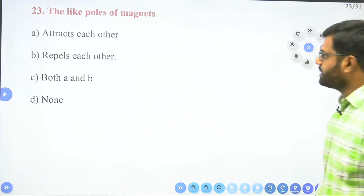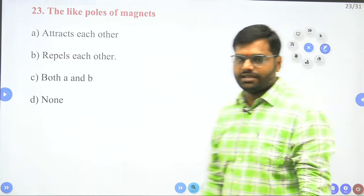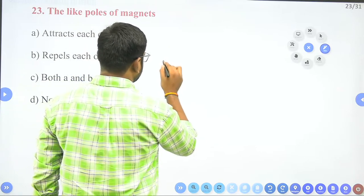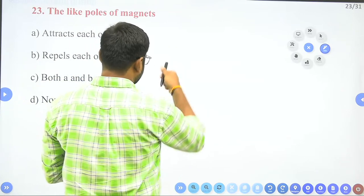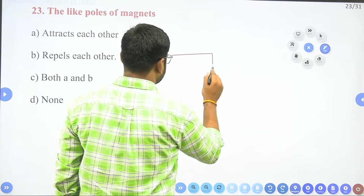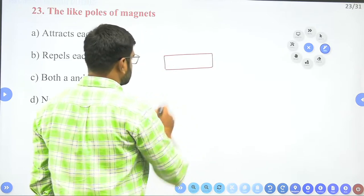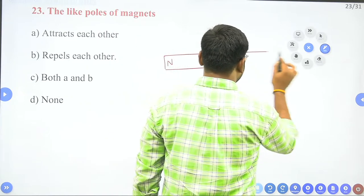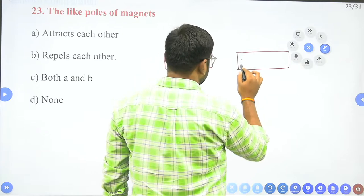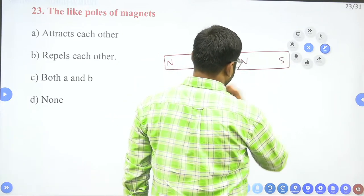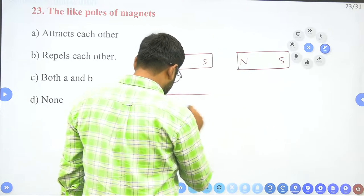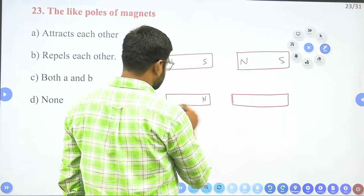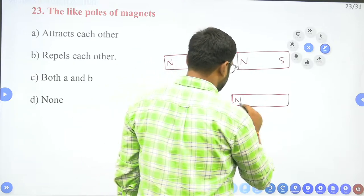The next question is about like poles of a magnet. Consider two bar magnets — the first has a north pole and south pole. The second bar magnet also has a north pole and south pole. Now consider these two magnets facing each other with like poles.